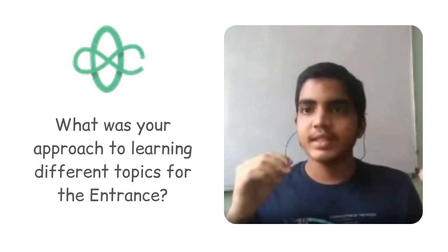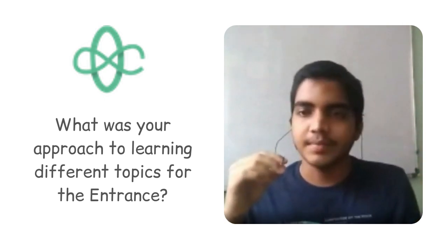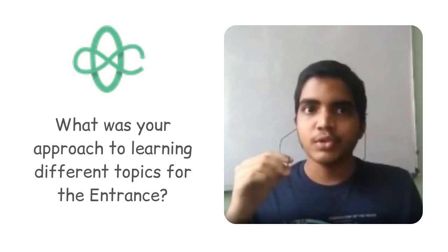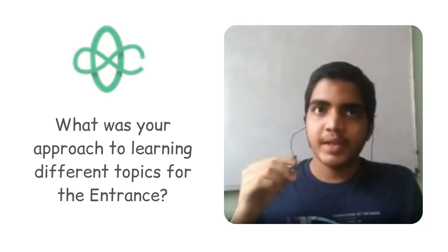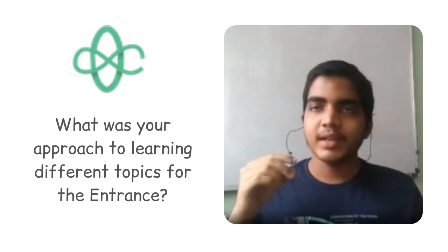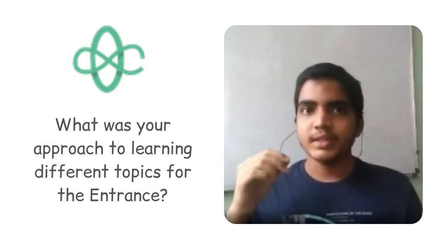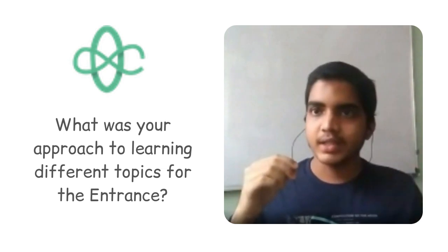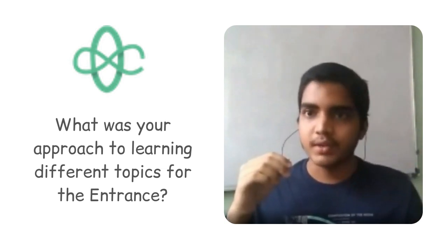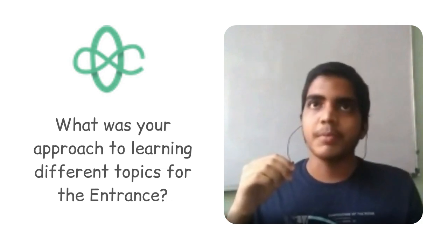I didn't really plan like this month is for this topic or that month is for that. There's a list of topics behind the TOMATO book itself. I saw what my preparation level was with respect to those topics and realized which topic was really weak and needed work. So maybe first I started solving easier questions from TOMATO, then went ahead to more difficult or moderate questions on AOPS.